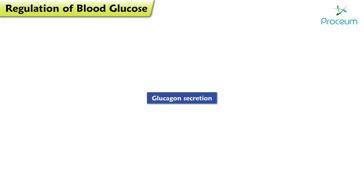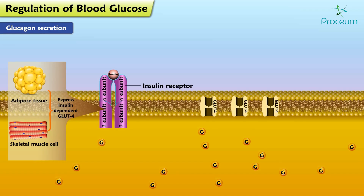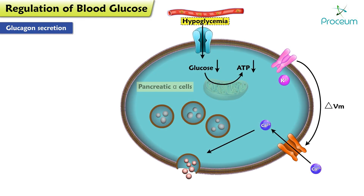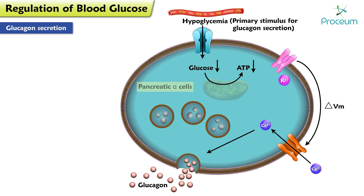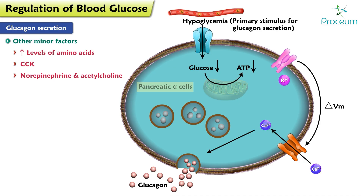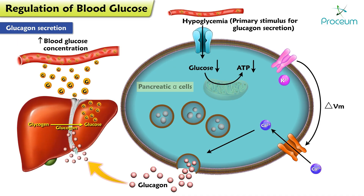This next part is about glucagon secretion. Now we have a complete idea regarding what happens when blood glucose levels are raised and the action of insulin. But what about the opposite situation, in which blood glucose levels are low — say upon waking in the morning? The pancreatic alpha cells kick in and release glucagon, which causes glycogen breakdown. The primary stimulus for glucagon secretion is decreased blood glucose. Other minor factors include increased levels of amino acids, CCK, norepinephrine, and acetylcholine. Glucagon causes an increase in blood glucose concentration by increasing glycogenolysis — where the liver releases stored glucose from glycogen back into the bloodstream — and it also stimulates gluconeogenesis.